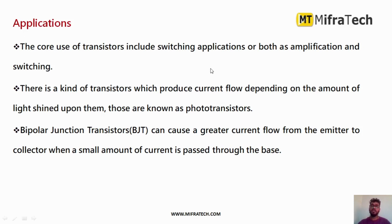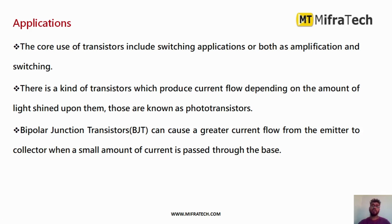The main applications of transistors include switching and amplification. There is a kind of transistor called a photo transistor, which produces a current flow depending on the amount of light shined upon it. A BJT — Bipolar Junction Transistor — can cause a greater current flow from emitter to collector; you can provide a low current as input and it provides a high current as output.